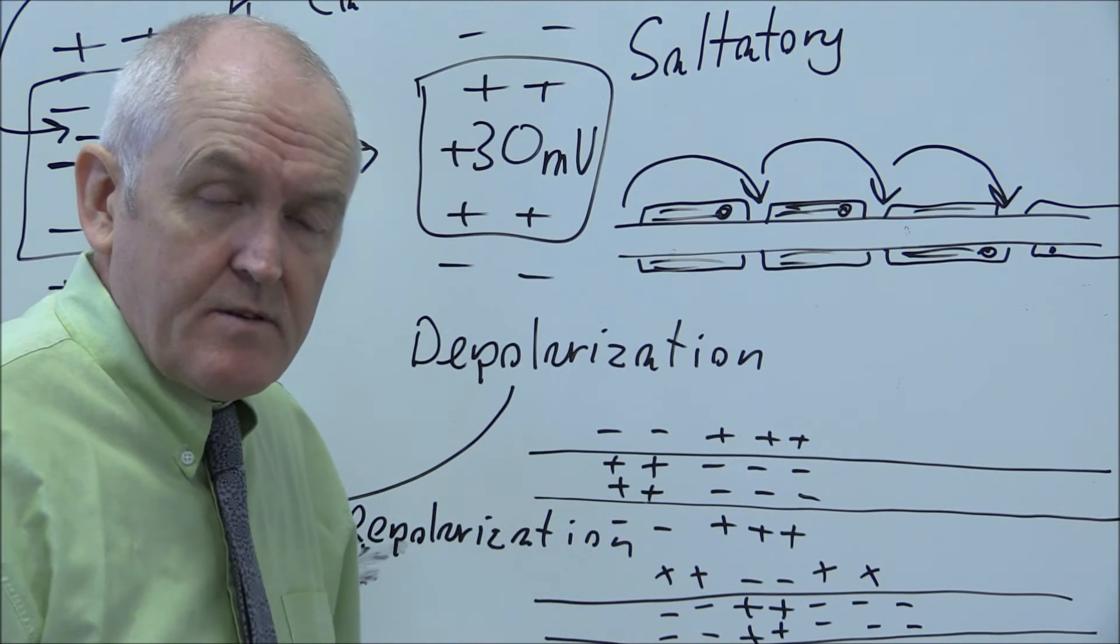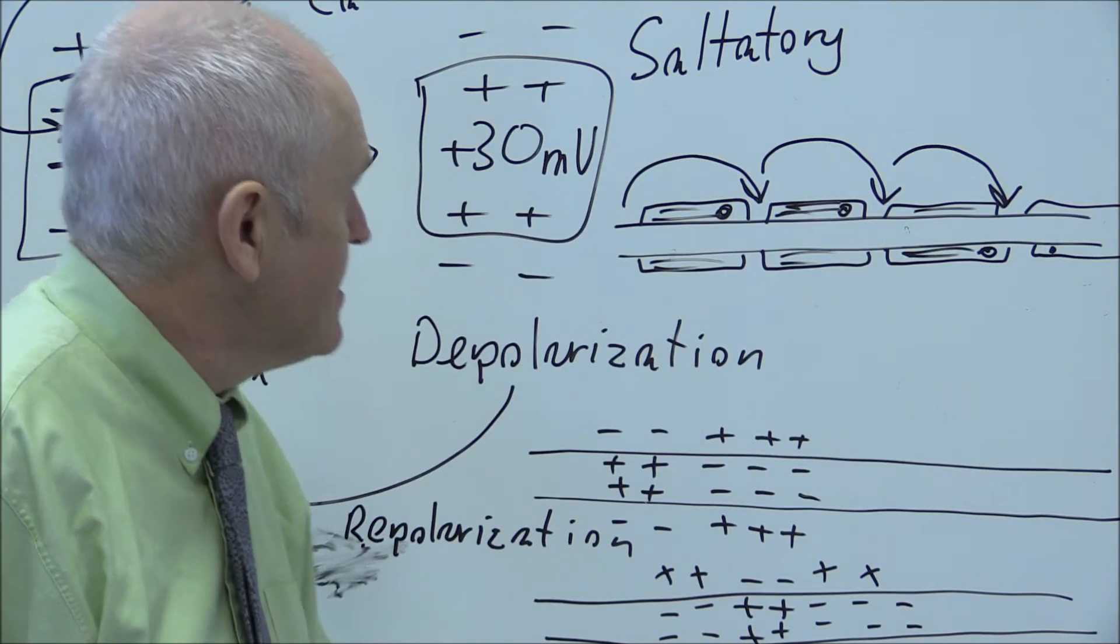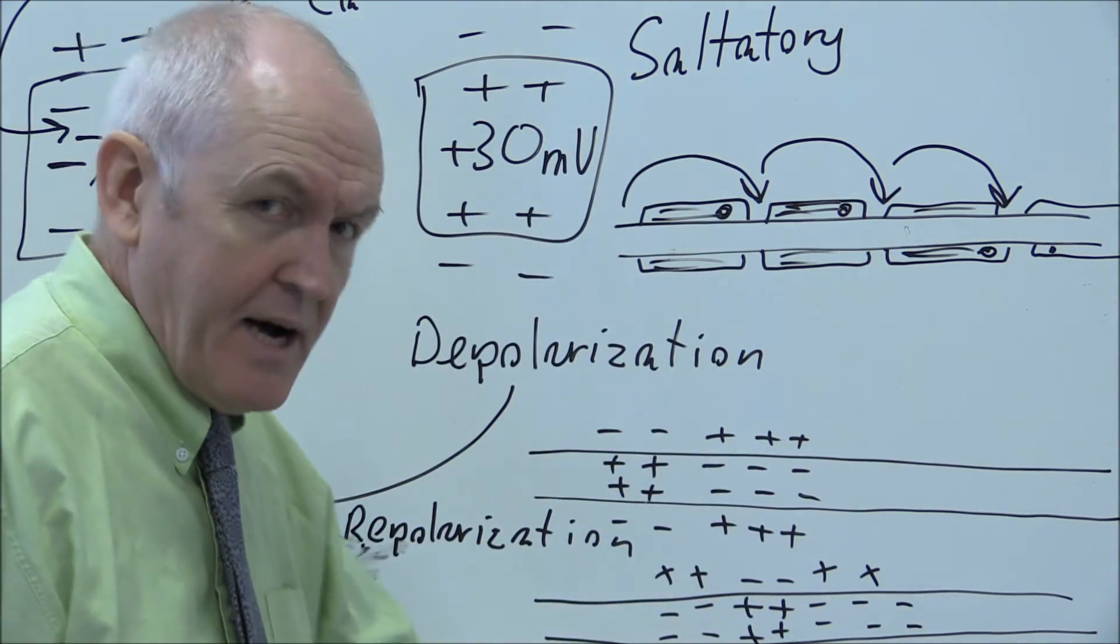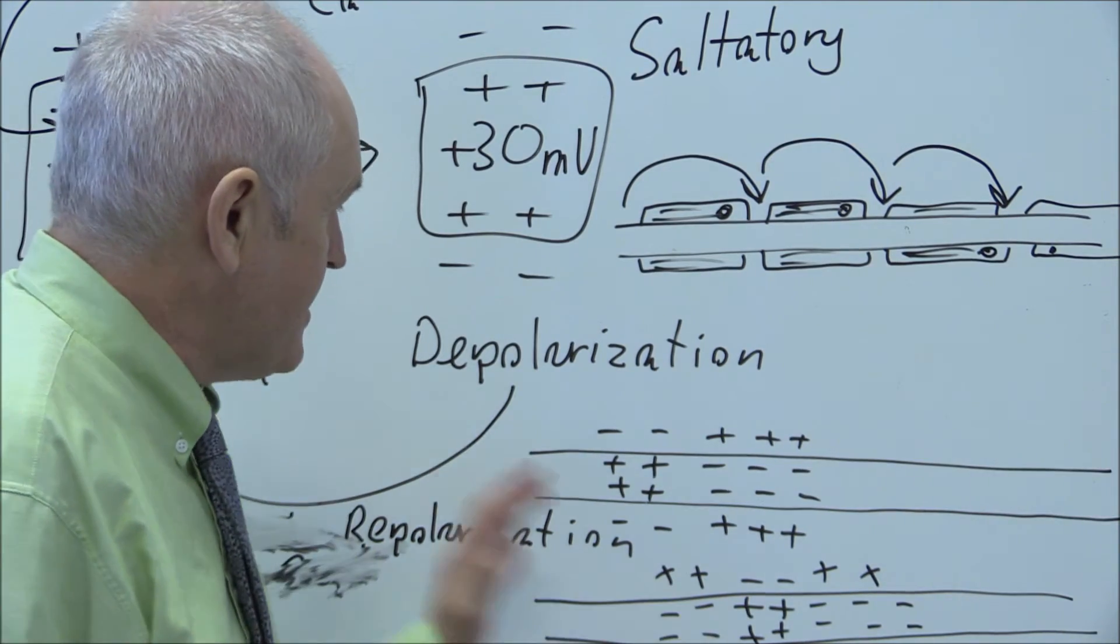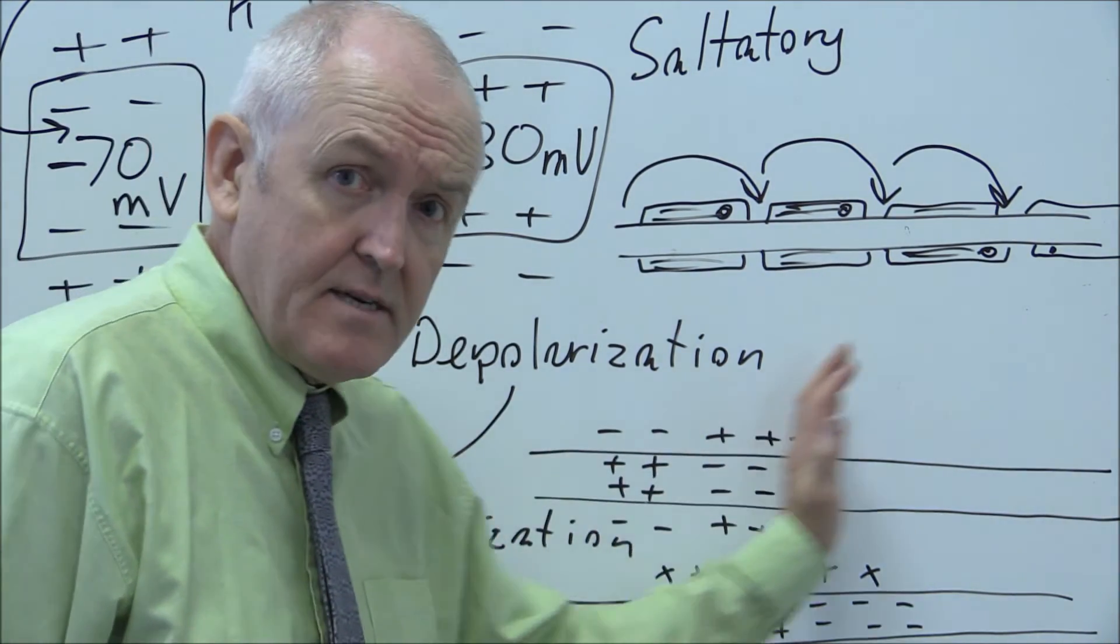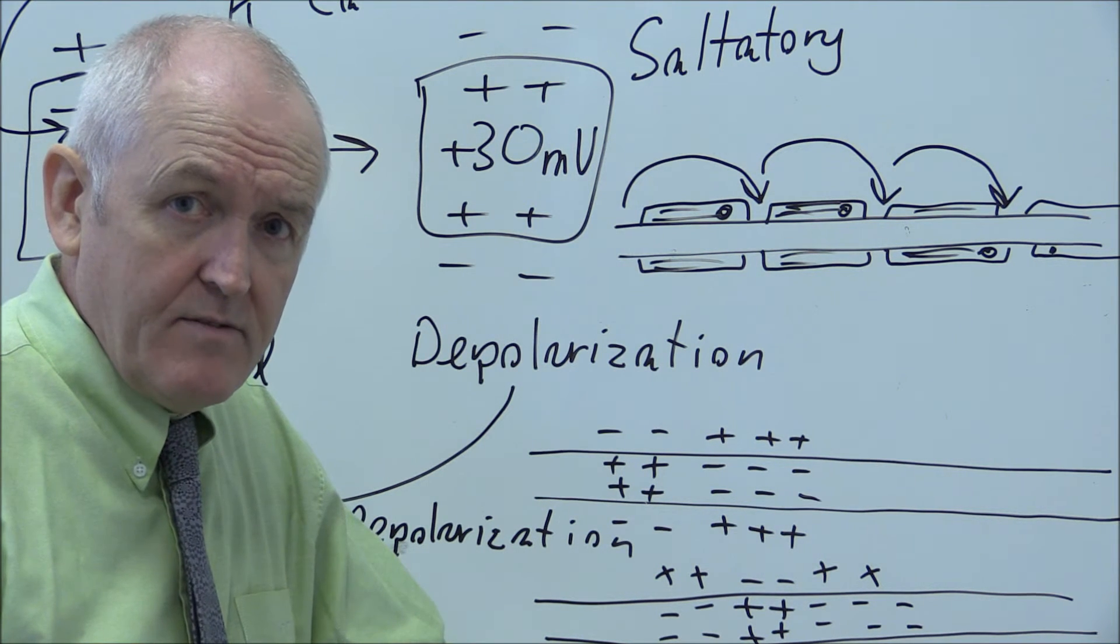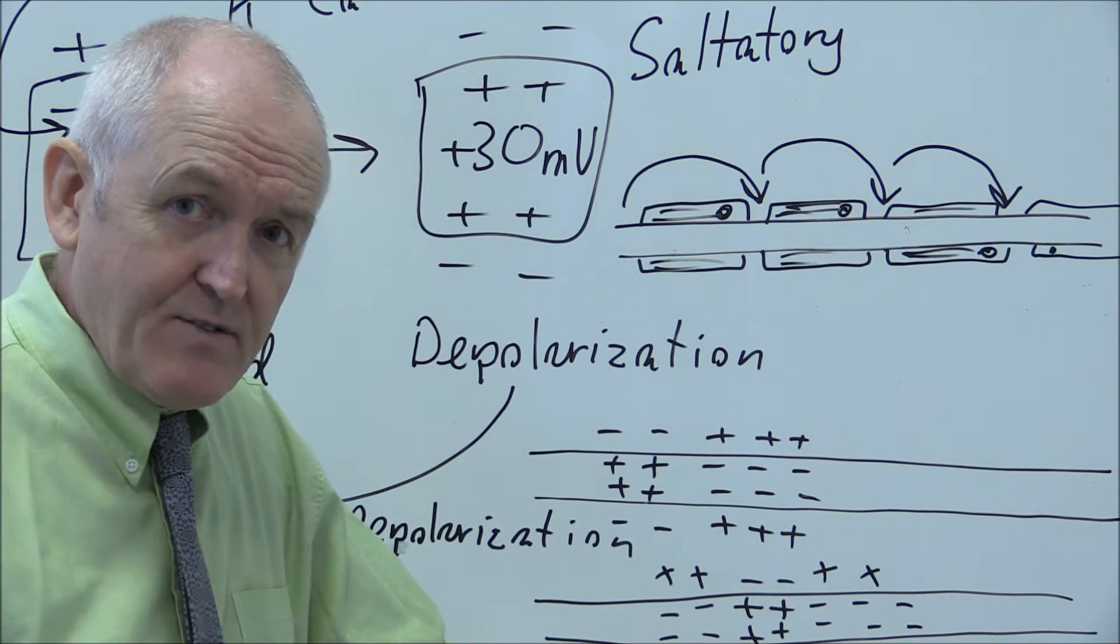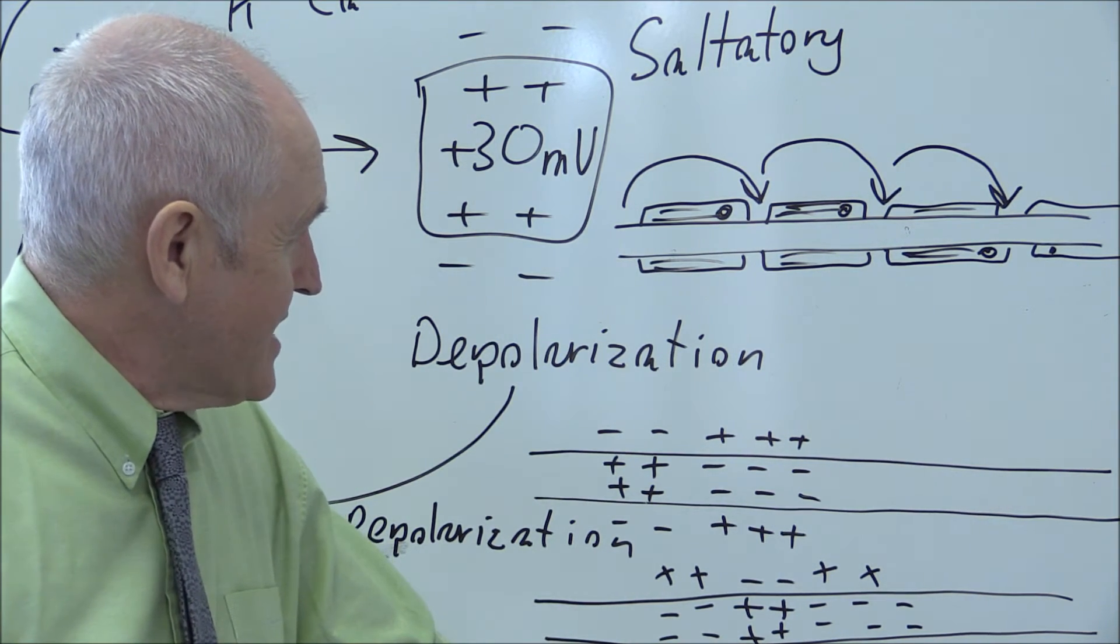So in the body, sometimes people talk about A, B and C type nerve fibers. The A and the B are myelinated with rapid transmission. The C fibers are unmyelinated. So in the C fibers, the impulse has to spread down the fiber via this wave of depolarization, without taking this shortcut from one node of Ranvier to the next.